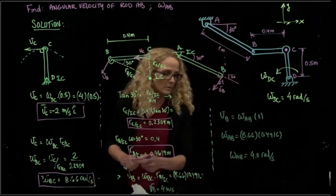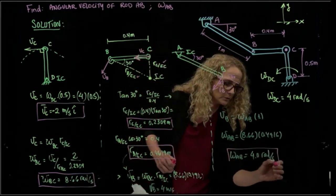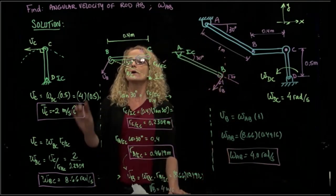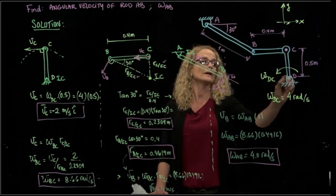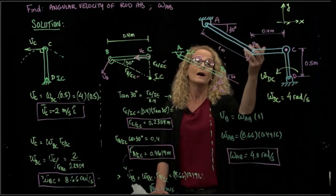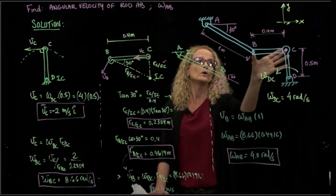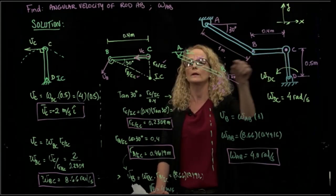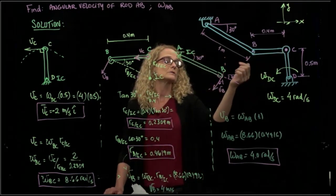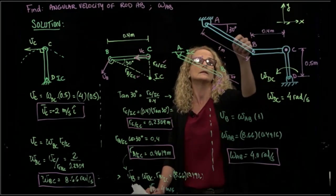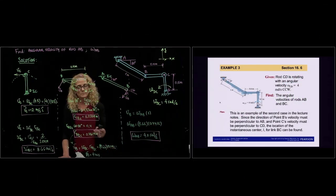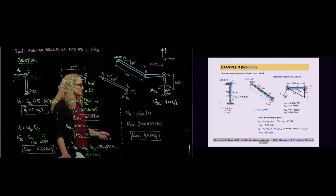So now we found what we were asked to find. Let's review: since we had the information of bar DC, we calculated the velocity of C, then found the direction of the velocity of B, and with those two pieces of information we found the instant center of rotation of BC. That allowed us to calculate the angular velocity of BC and then the angular velocity of AB. You can also see the solution of this problem in the PowerPoint presentation.